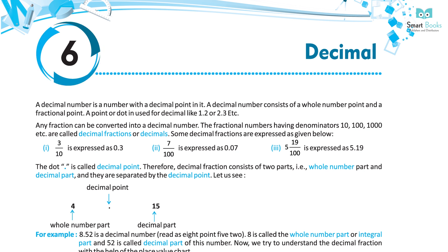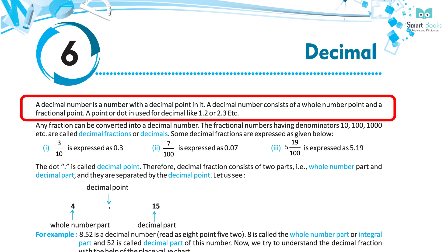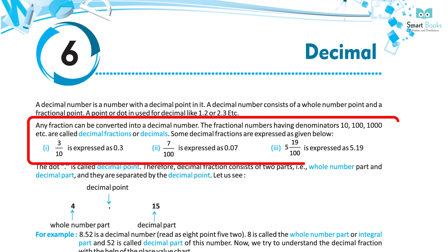A decimal number is a number with a decimal point in it. A decimal number consists of a whole number part and a fractional part, separated by a point or dot. For example, 1.2 or 2.3. Any fraction can be converted into a decimal number. Fractional numbers having denominators 10, 100, 1000, etc. are called decimal fractions or decimals.